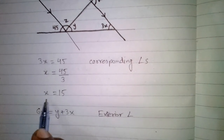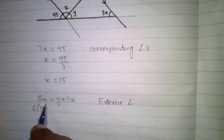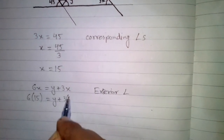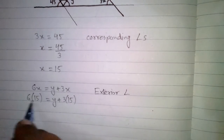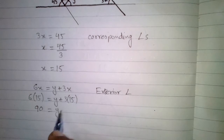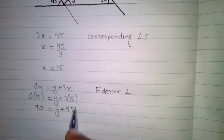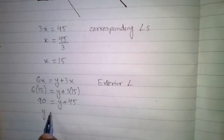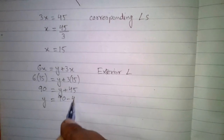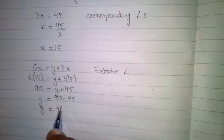Now we substitute the value of X, which is 15. So 6 times 15 equals Y plus 3 times 15. That gives us 90 equals Y plus 45, so the value of Y is equal to 90 minus 45, which is 45.